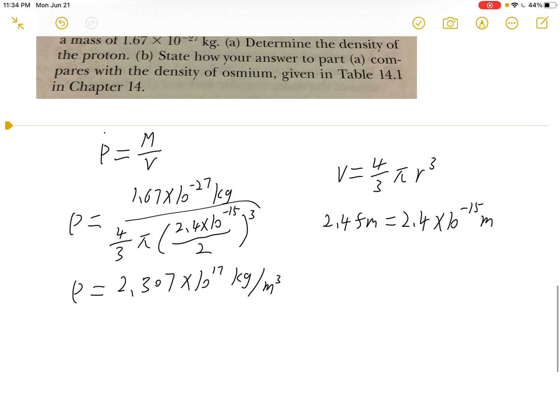So for part B, we can get the density of osmium from the table, which is 22.6 times 10 to the 3rd power kilogram per cubic meter.